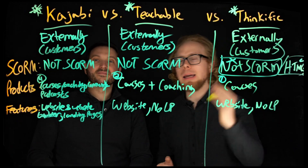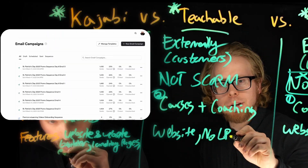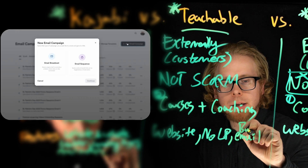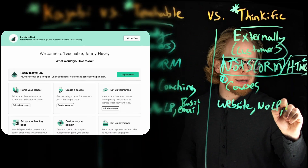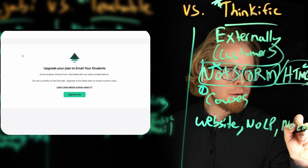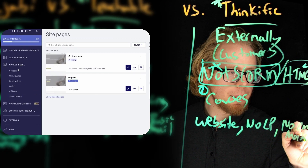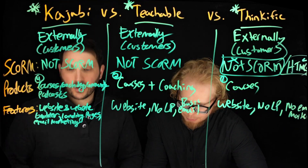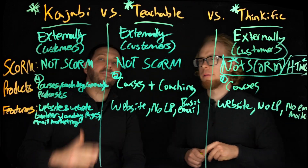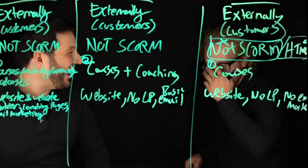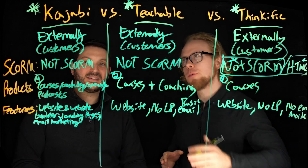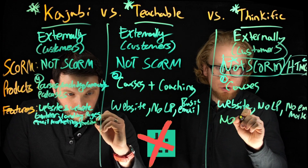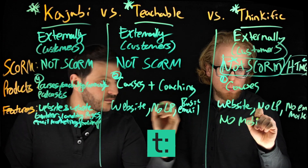Kajabi also has email marketing. Teachable does have email marketing, but it's really basic — super basic, you can't do much with it. Thinkific does not have email marketing at all, which is absolutely critical to selling courses. The last feature worth talking about: Kajabi has a mobile app, Teachable has a mobile app, but Thinkific does not have a mobile app. We're really sad about it — we thought they would, and then they didn't, and then we picked Kajabi.